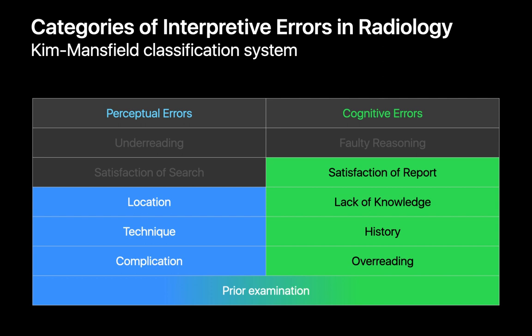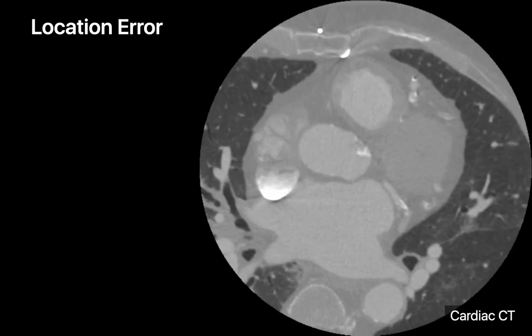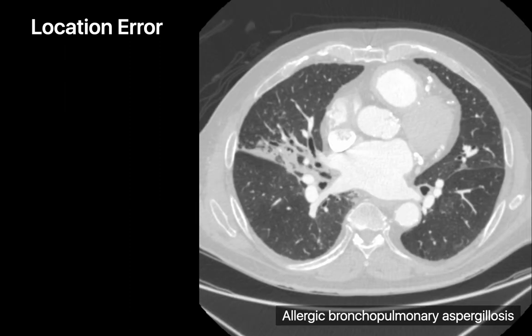Let's go through the other eight types of errors that make up the other 25% of interpretive errors. Location errors are what radiologists also call corner-of-the-film errors — errors where a pertinent finding is present but outside of the visual field of interest, like at the very edge of an image or on the very first or very last image of a CT series, particularly an ancillary one like an expiratory phase chest CT series. On this cardiac CT, there was something abnormal in the partially imaged right perihilar region near the margin of the cardiac FOV, which turned out to be ABPA.